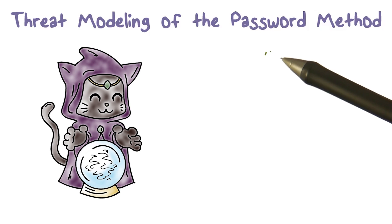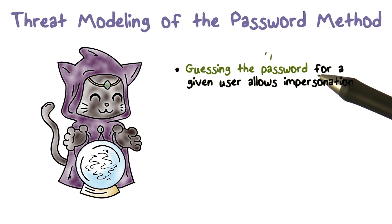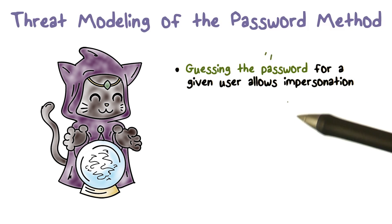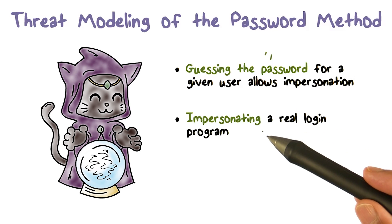What kind of threats do we need to be concerned about? It's a secret that's shared between you and the system. Someone can try to guess that secret. So one threat is not having good passwords that can be easily guessed by attackers. That's one threat we have to be concerned about for authentication based on passwords.